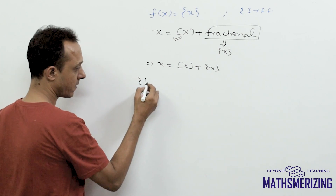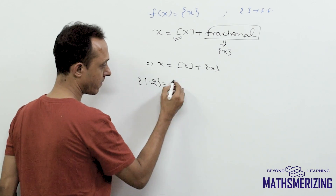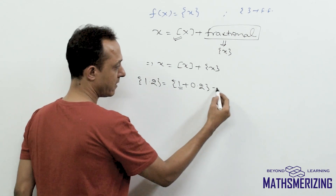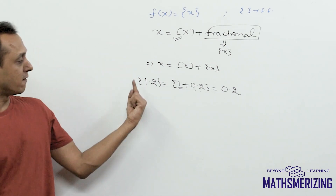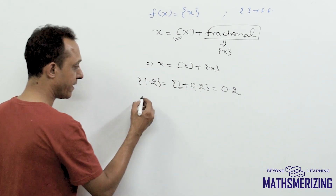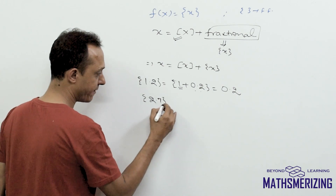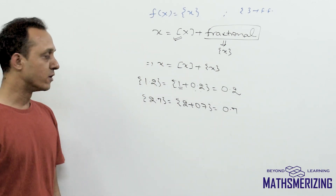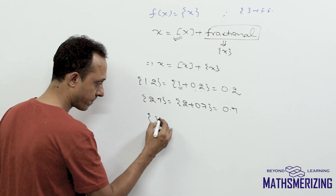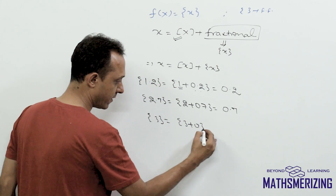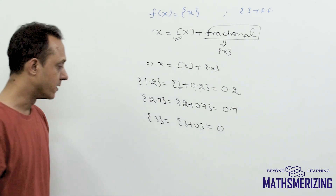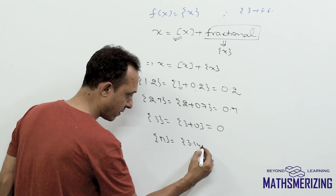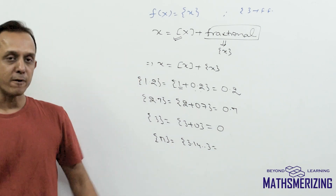For example, fractional part of 1.2: it is 1 plus 0.2, so 1 is the integral part and 0.2 is the fractional part — so {1.2} = 0.2. Similarly, {2.7} = 0.7. For 3, it is 3 plus 0, so there is no fractional part — {3} = 0. For π, which is 3.14..., it is 3 plus 0.14...